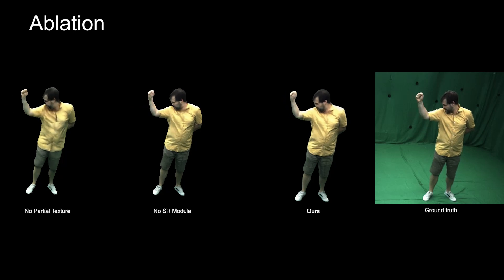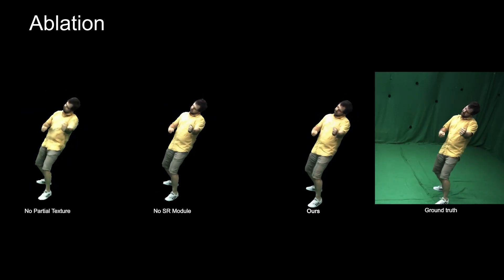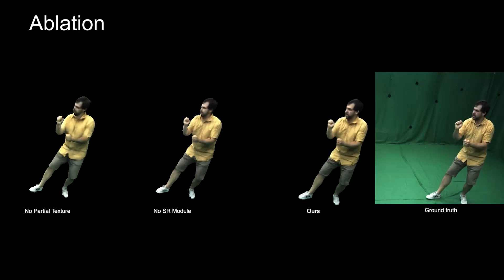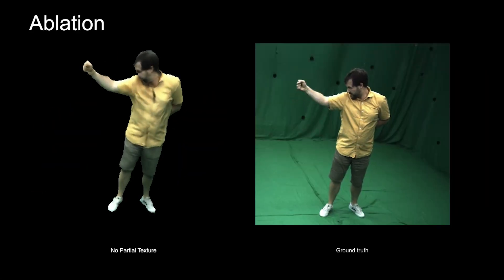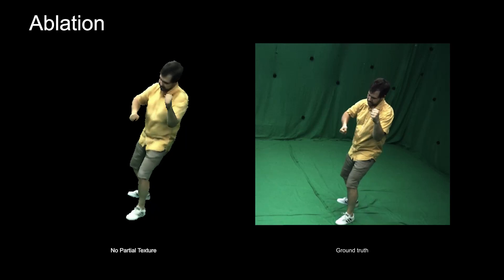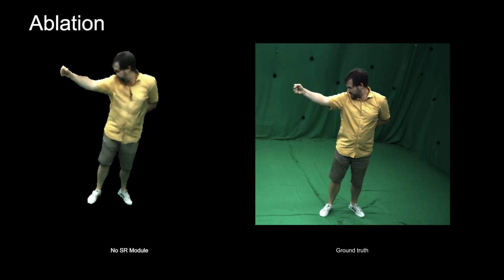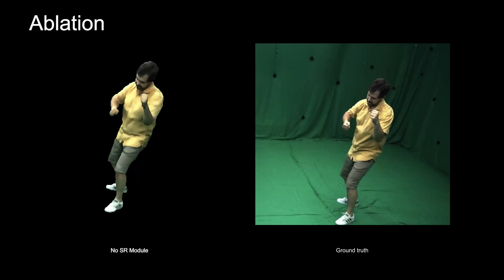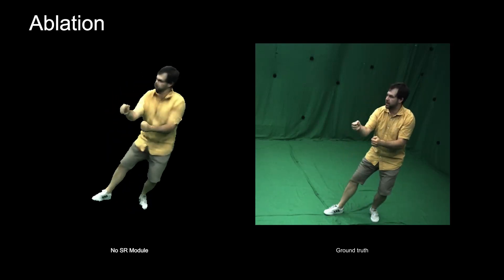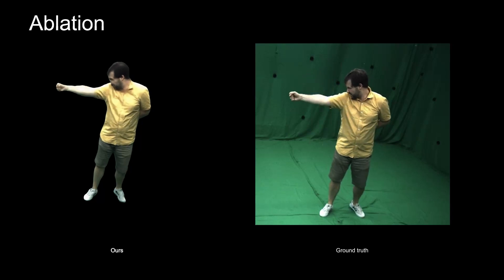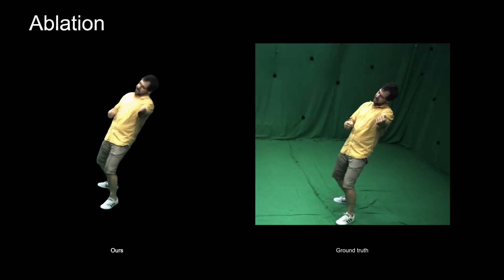We ablate some of the components of our method. If we remove partial texture conditioning, the fine details such as clothing wrinkles are no longer present. Further, if we remove the SR module at the end of our method, we face rendering artifacts at the boundaries. Finally, our full method with all components has graceful boundaries and is noticeably sharper.